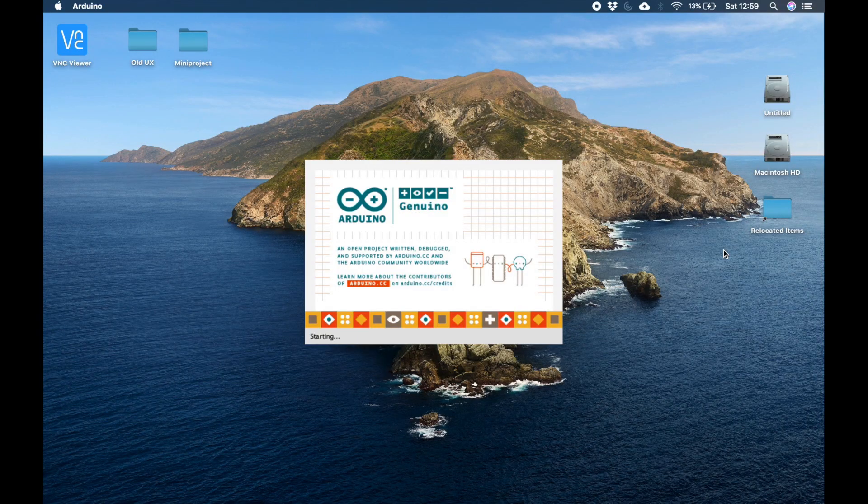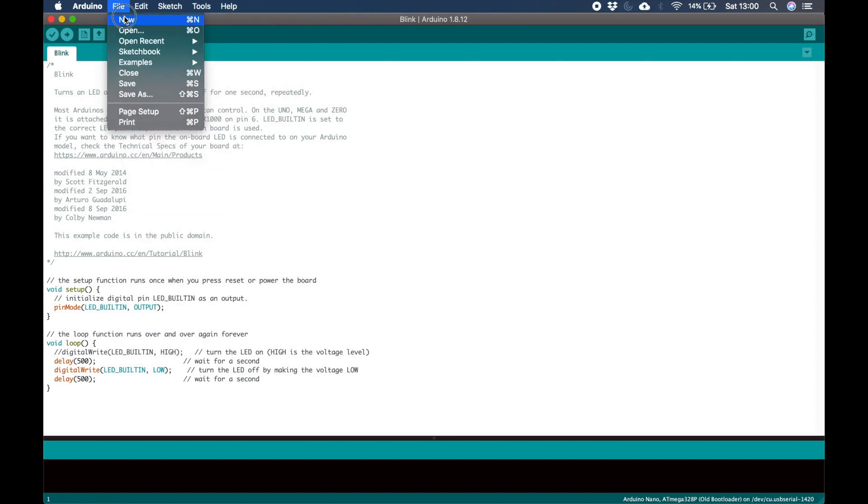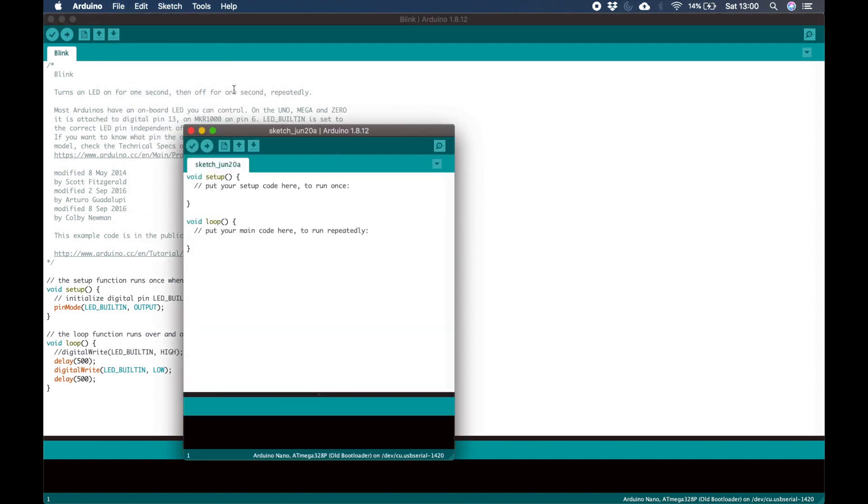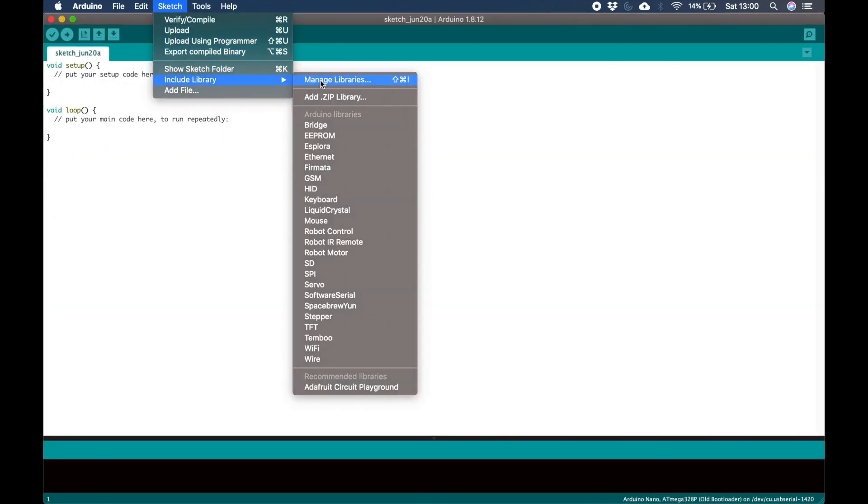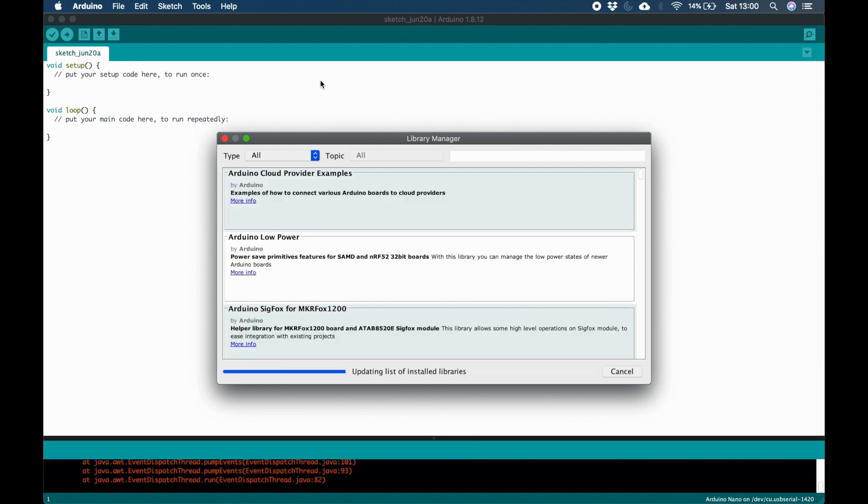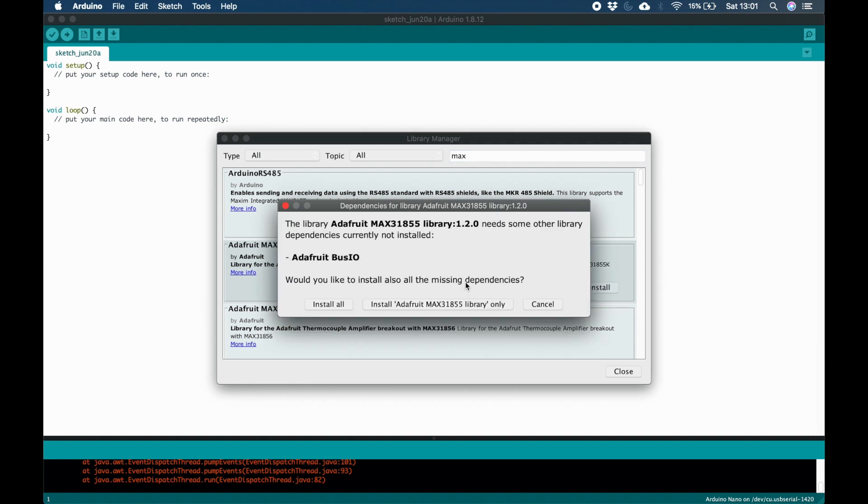Next we're going to open the Arduino software and install the library for the MAX 31855k breakout board. This can be done by selecting Sketch and Include Library and finally Manage Libraries. From the Library Manager you can search which libraries you wish to install. So I'm going to search MAX and select the MAX 31855 library. You can install the newest version and please install any other missing dependencies as they will be needed.